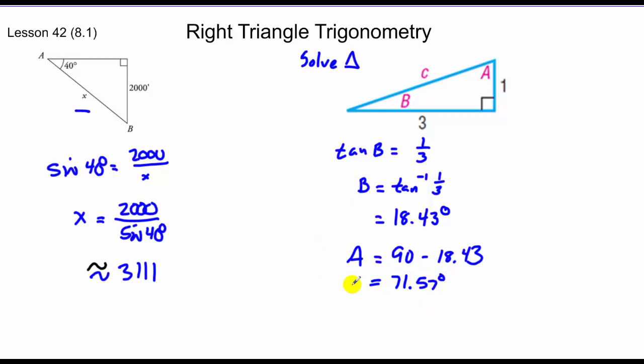And that's going to give us 71.57 degrees. So now I have A and B, and I'm looking to find side C. I could just use Pythagorean theorem because it's a right triangle. So that's 1 plus 9 is equal to C squared, C is equal to root 10. It's that easy.